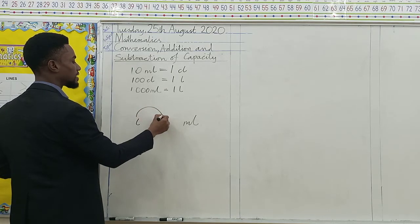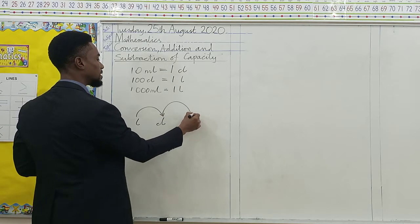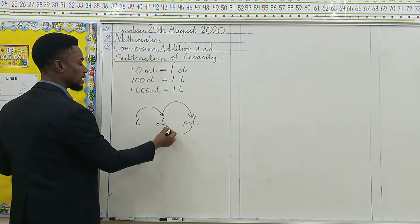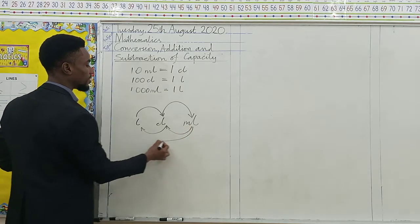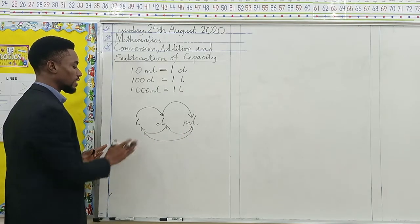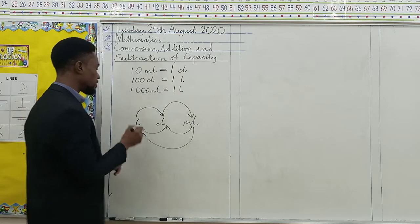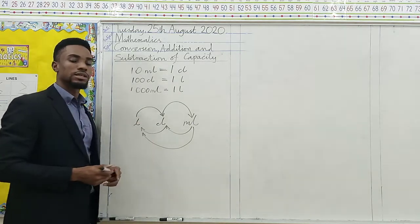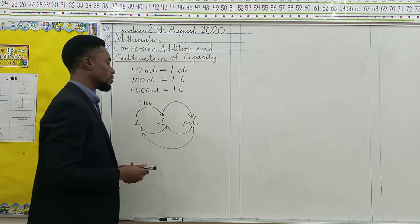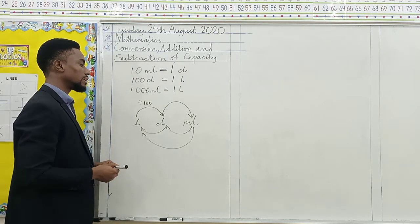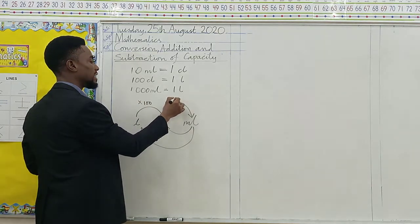It has arrows or arcs pointing from the liter to the centiliter, and from the centiliter to the milliliter, and then pointing back this way. I am going to add my own arc going directly from liter to milliliter. So let's make it a little larger. If you are changing from liter to centiliter, you multiply by 100. If you are changing from centiliter to milliliter, you multiply by 10, which is why one centiliter will give you 10 milliliters.